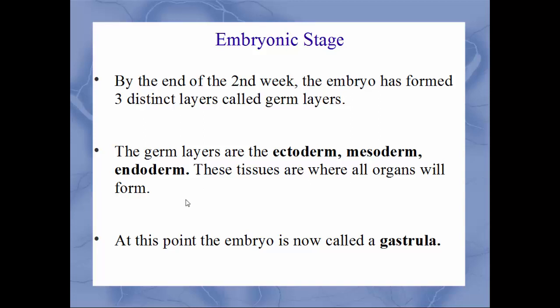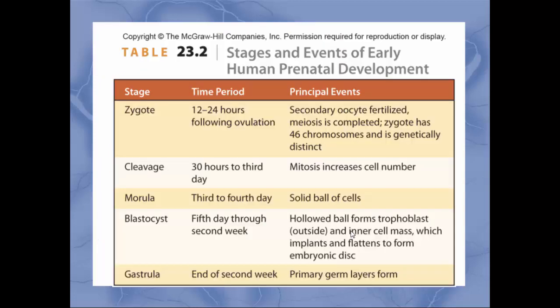When you form these three layers, it's now called a gastrula, because forming these three layers is called gastrulation. This table summarizes the order and principal events of each stage. The zygote refers to 12 to 24 hours after ovulation and fertilization. Cleavage is first; from cleavage you get the morula, which is that solid mass of cells; then the blastocyst, which is a hollow ball of cells; and then the gastrula, which is a three-tissue-layered structure.